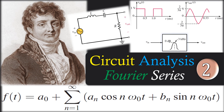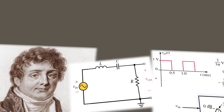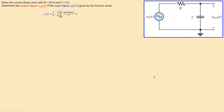Welcome back to a new video about circuit analysis using Fourier series — this is example number two. We have the following circuit: a voltage source VS applied to an RC circuit, with R = 50 ohms and a capacitor of 5 farads. We would like to determine the output response of this circuit for the given input signal VS.